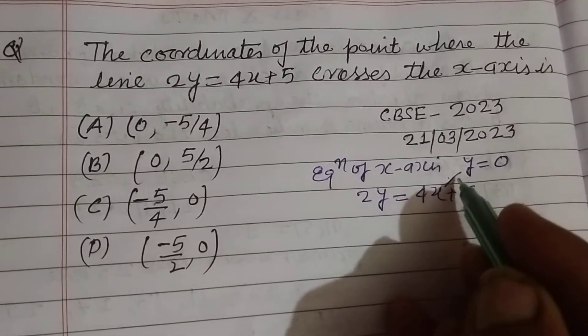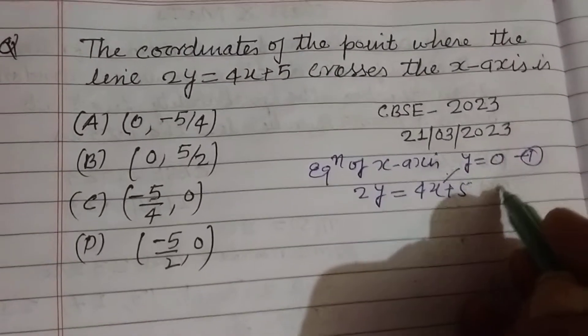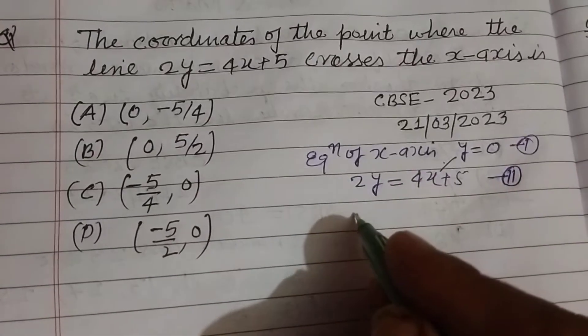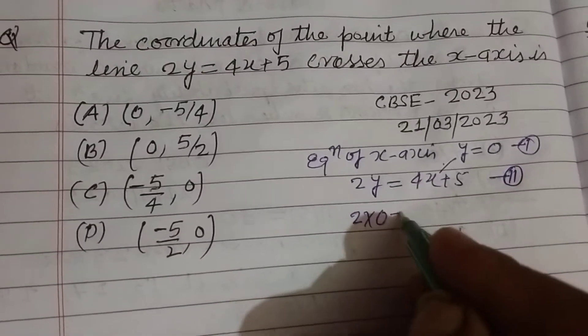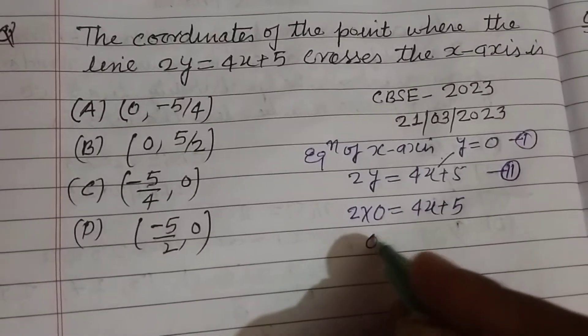Now put the value of y in this equation. This is first and this is second. So solving this, putting y equals 0, we get 2 times 0 equals 4x plus 5. So this is 0 equals 4x plus 5.